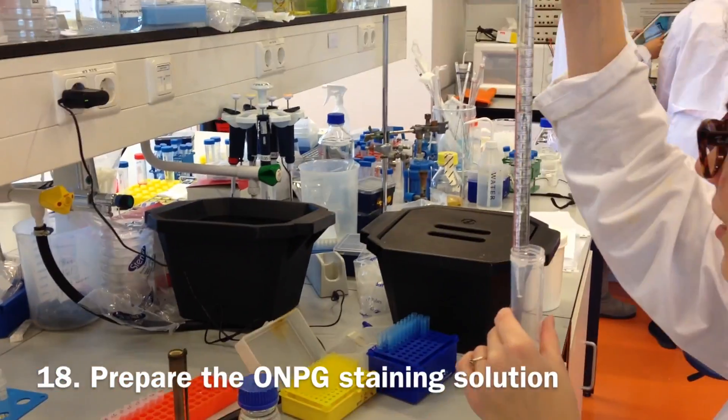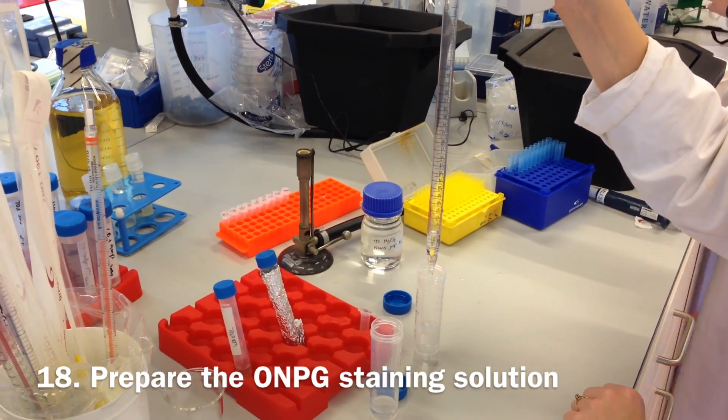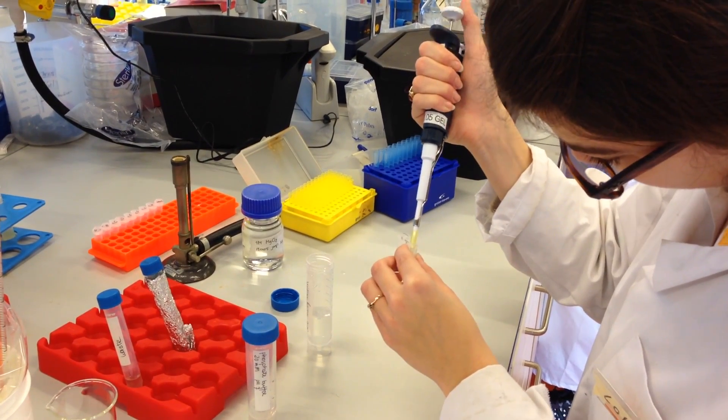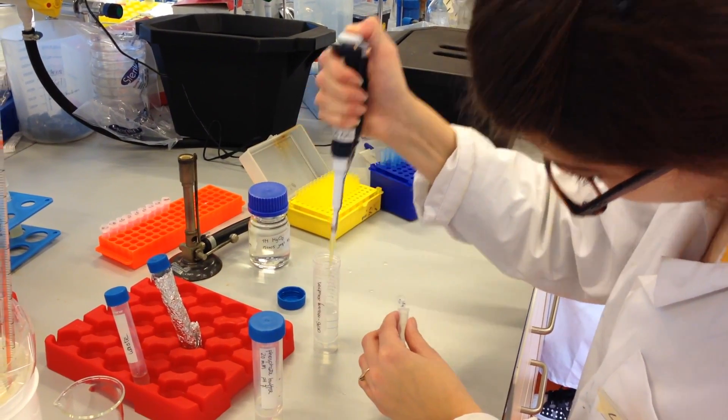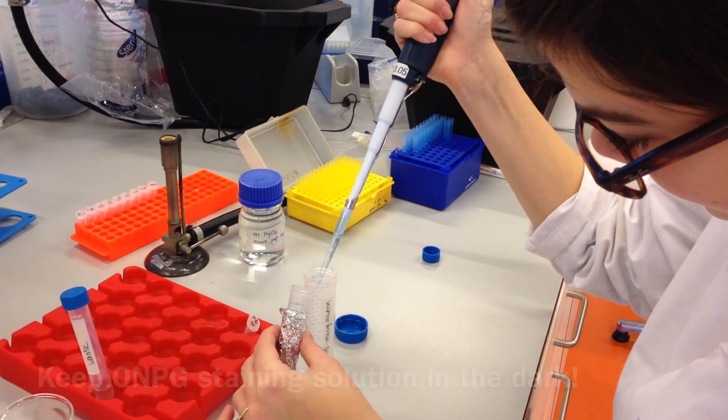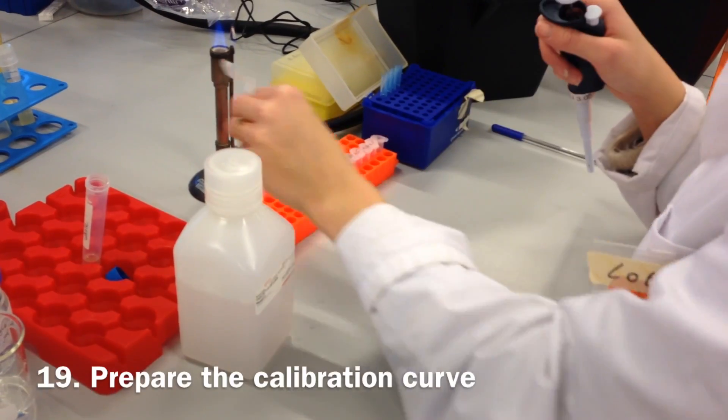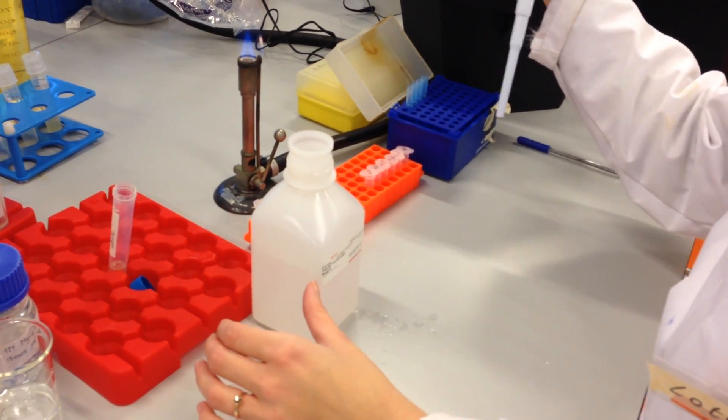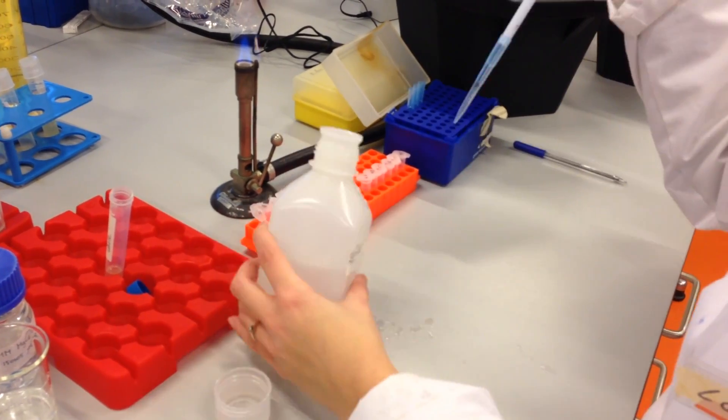Continue preparing the ONPG staining solution. Pipet the phosphate buffer, magnesium solution and the ONPG solution together in a 15 mL tube. Prepare a calibration curve for the assay by making a range of beta-galactosidase concentrations in lysis buffer.